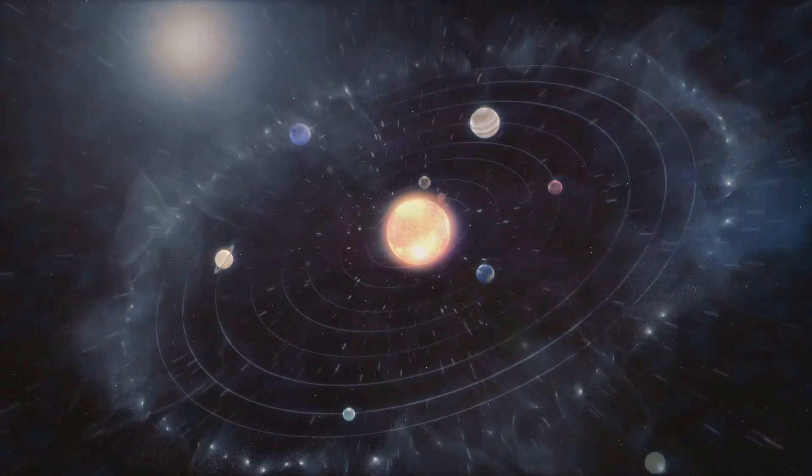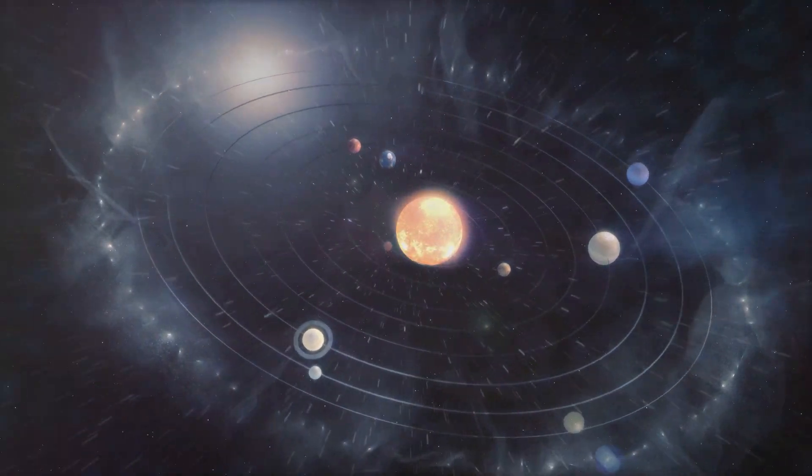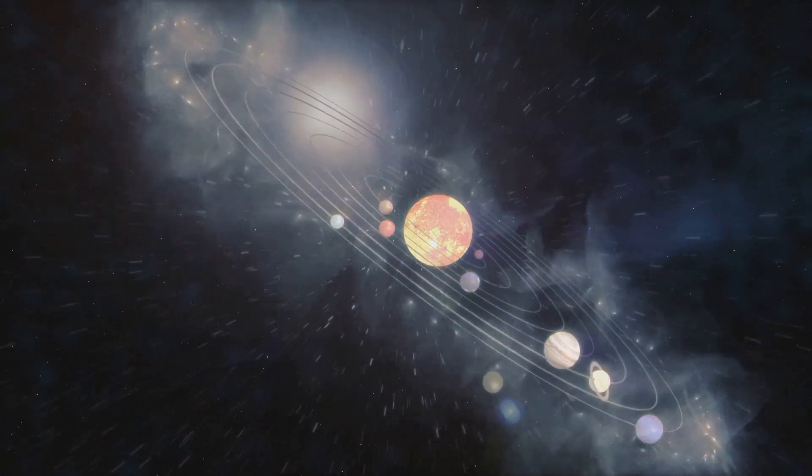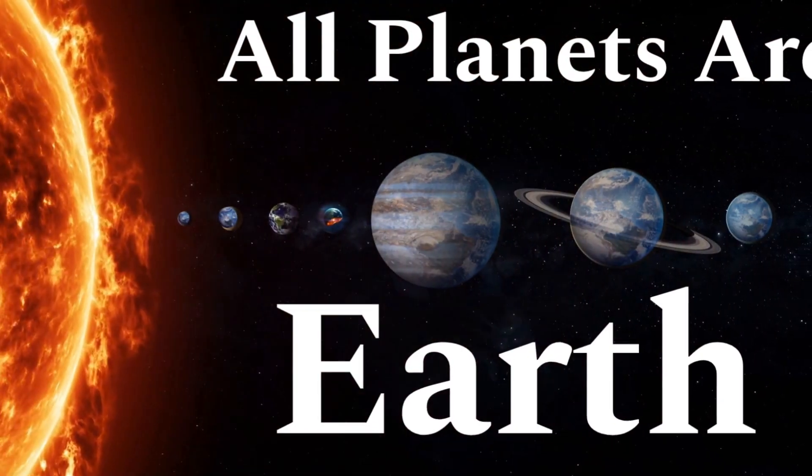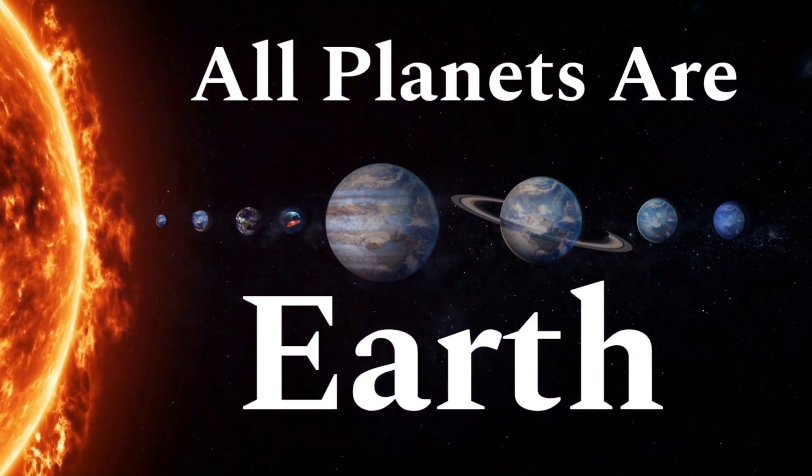Ever pondered upon the question, are galaxies alternate realities? If so, then you're in for a treat. Today we're going to delve into the uniplanetary evolution theory, a captivating concept that suggests all eight planets in our solar system are essentially Earth, but at different stages of evolution.